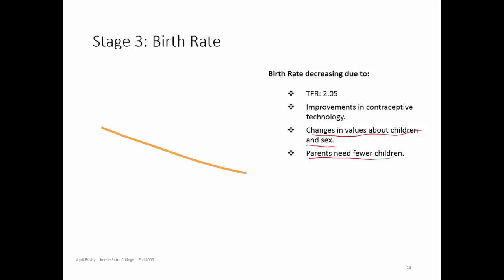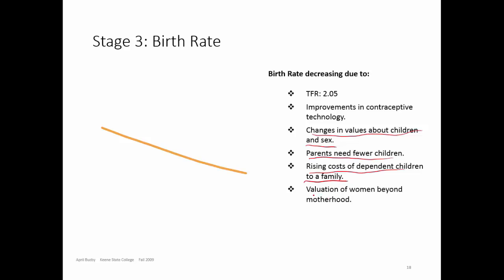The social system and industrialization allows people to live without the need for manual labor, so parents need fewer children. Rising costs of dependent children — children are no longer assets, they are liabilities, and it costs to get them to maturity. The elevation of women beyond motherhood: they no longer need to be baby factories, so they are fully in the labor force. If they're working mothers, they don't have the time to devote to children or child rearing.